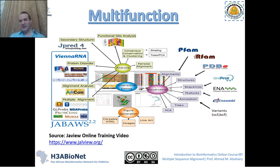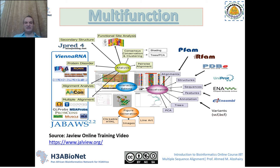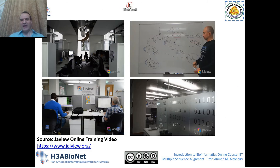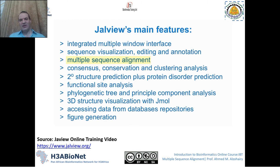Jalview has many functions beyond just multiple sequence alignment — you can also predict secondary structure and function, make a phylogenetic tree, and predict 3D structure. Developers are always working to improve it on a regular basis, so every now and then you can check the website and find a newer version. One of the main features of Jalview is multiple sequence alignment, which is why we focus on it in this module.